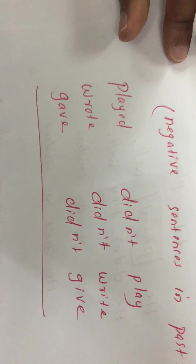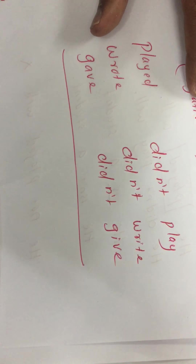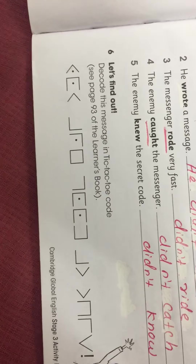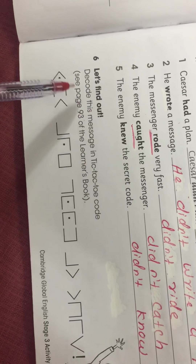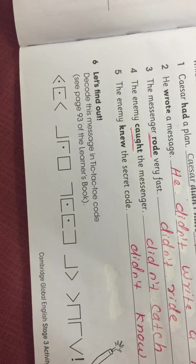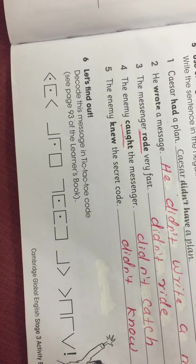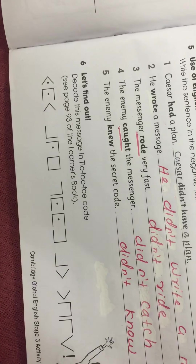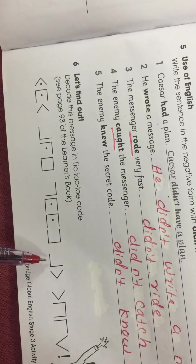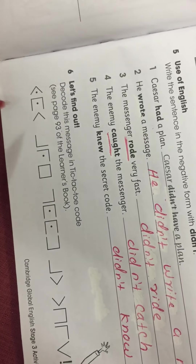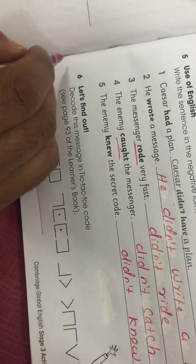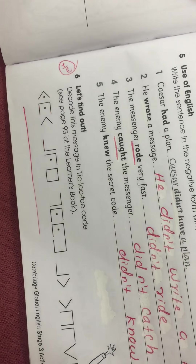I will send you some questions to do more practice — change into negative, or add 'not.' Now question number 6 is the last question. Record this message in tic-tac-toe code — we studied three kinds of codes, and the last one was tic-tac-toe code. See page 93 of the learner book. Decode the complete sentence and do it as homework.